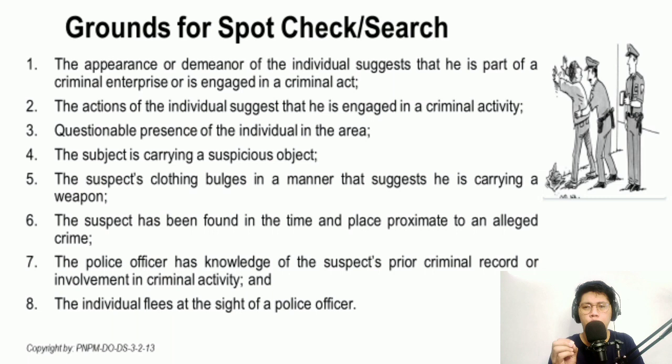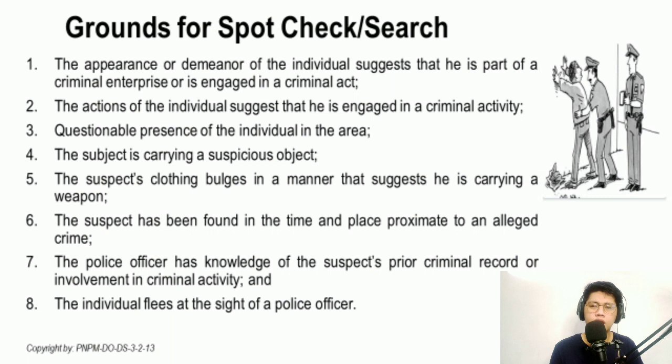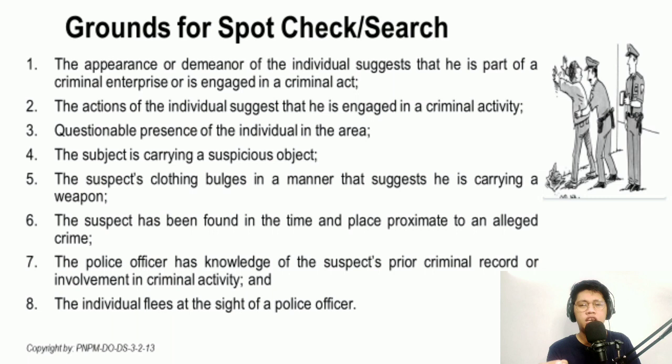The fifth circumstance is when the suspect's clothing bulges in a manner suggesting he is carrying a firearm or weapon. If while conducting patrol you came across a person who appears to be carrying a concealed firearm on his hips or any type of weapon concealed inside his clothing, and you believe that what is bulging is indeed a deadly weapon, then you have all the rights to stop and search that person.